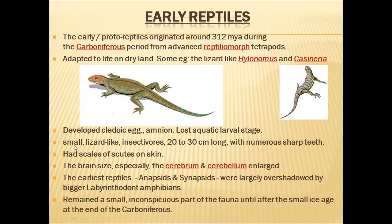All early reptiles were small in size, resembling lizards, and all were insectivores. They did not measure more than 20 to 30 centimeters long. They were having numerous sharp teeth, which tells us they were insectivores. They also had hard scales or scutes on their skin — another major adaptation to terrestrial life.